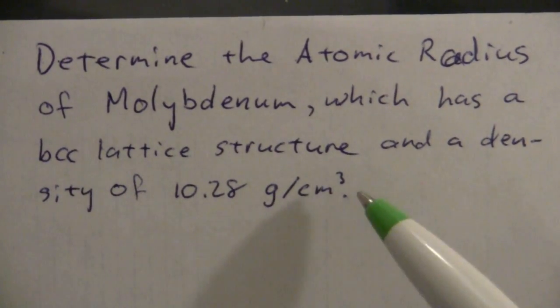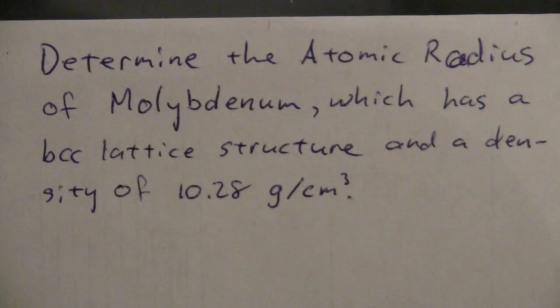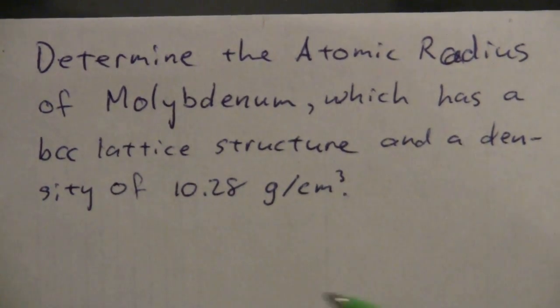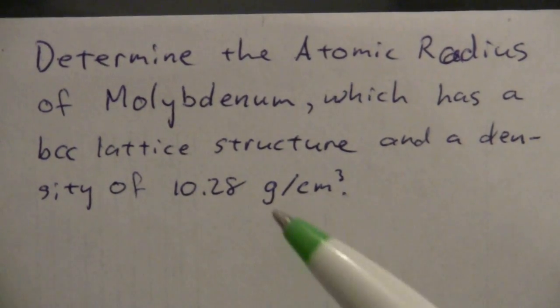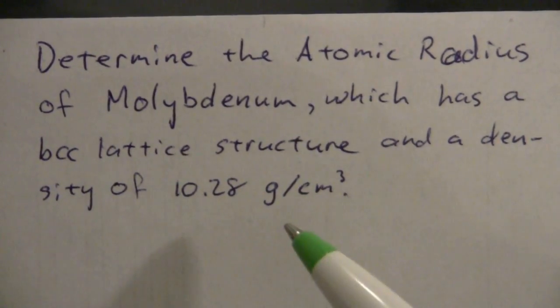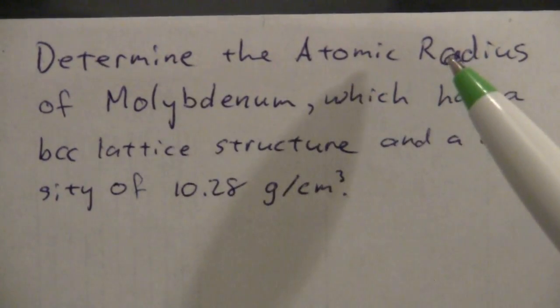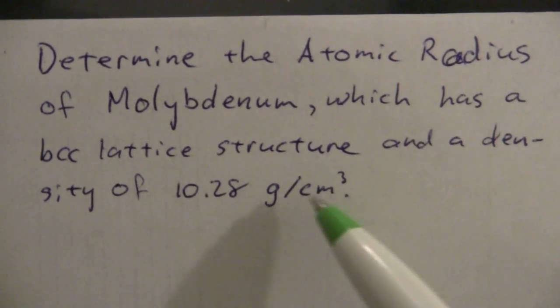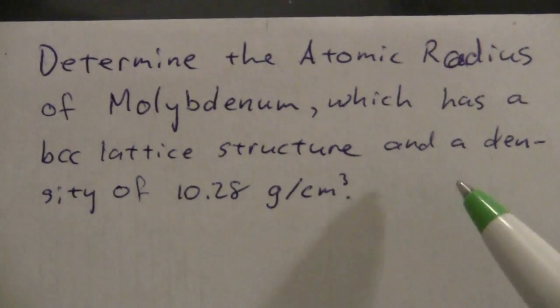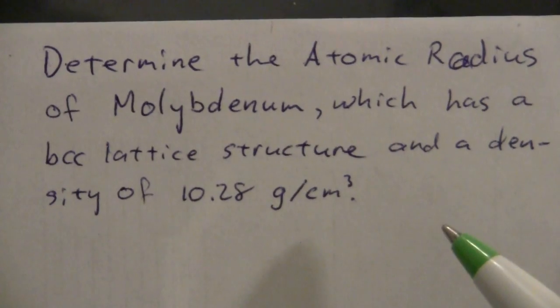The density is 10.28 grams per cubic centimeter. So in this problem we're working from density and we want to find the atomic radius which is going to come from the dimensions of its unit cell.